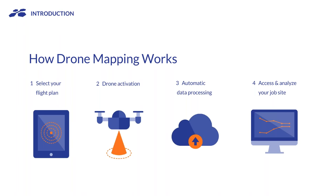On a pretty standard site, it'll take something in the order of 10 to 20 minutes to fly the area — and the drone is actually flying itself. You're looking at around six hours for a standard job site until you actually have the data back. So you fly that morning and you're looking at the report before you leave the office, compared to traditional surveying where it can easily be weeks or even months.